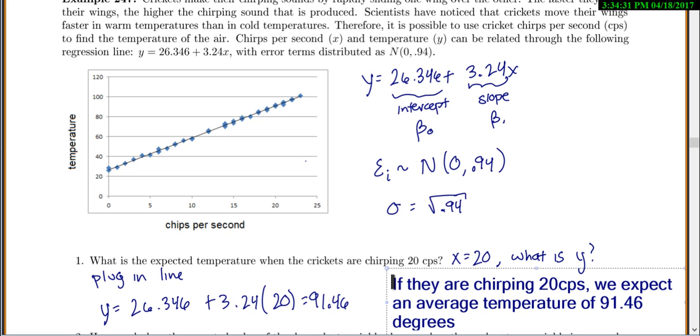Now you guys should be used to this. I like to interpret everything we do. So if they are chirping at 20 chirps per second, we expect an average temperature of 91.46 degrees. Now why do we say an average temperature? Because from day to day, it's going to vary a little bit. Every time they chirp 20 chirps per second, it's not going to be exactly 91 degrees. But if we went through and we found all the different times they chirp 20 chirps per second over a few months, found that the temperature each time and took the average, it should be about 91.46.